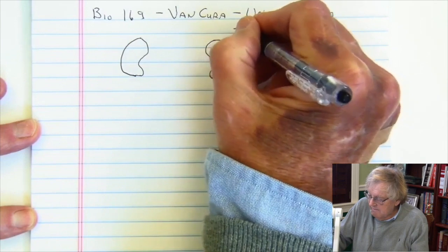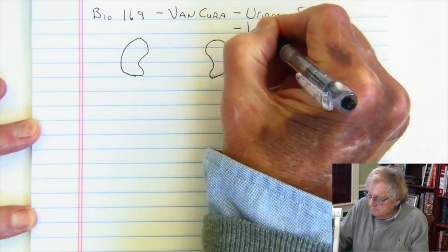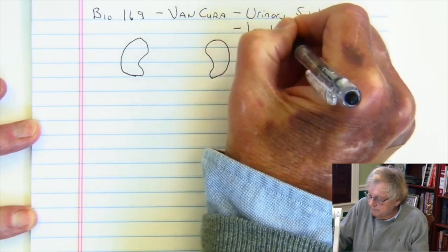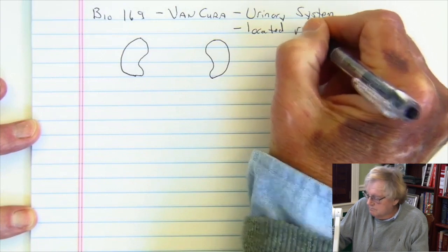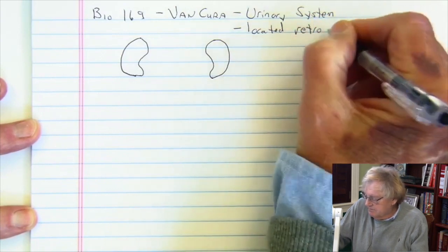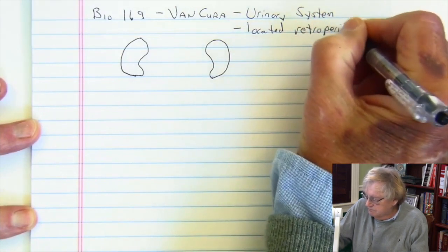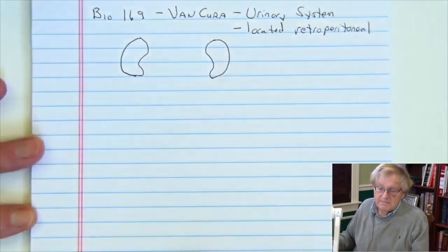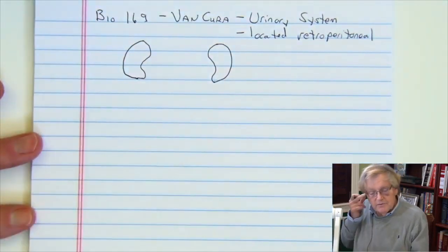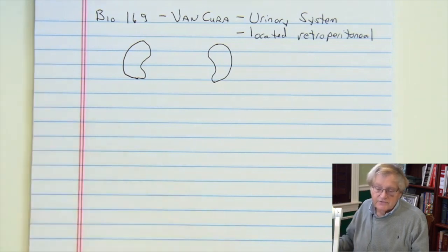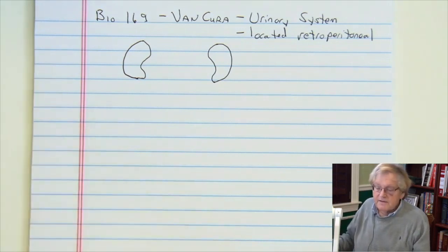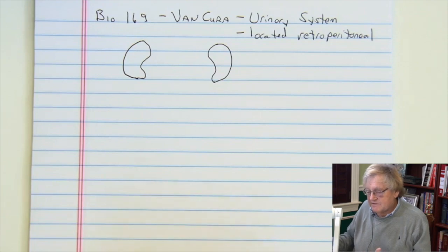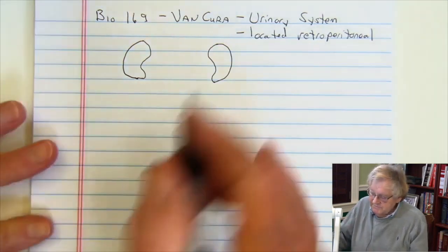The kidneys are located retroperitoneal, so they're behind the peritoneum. That's why when you get a urinary tract infection, a cystitis, or glomerulonephritis, you get that pain that seems to go right into the depth of your back.